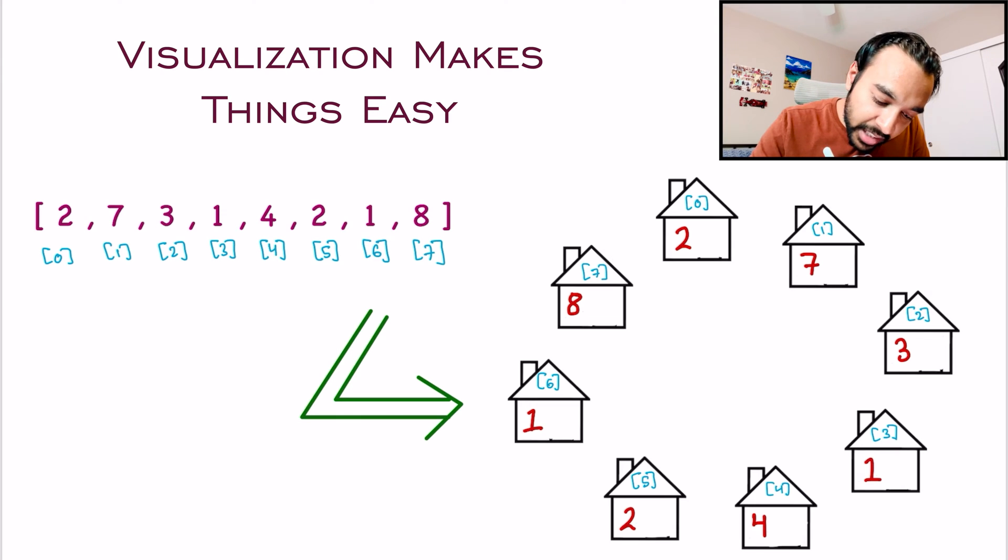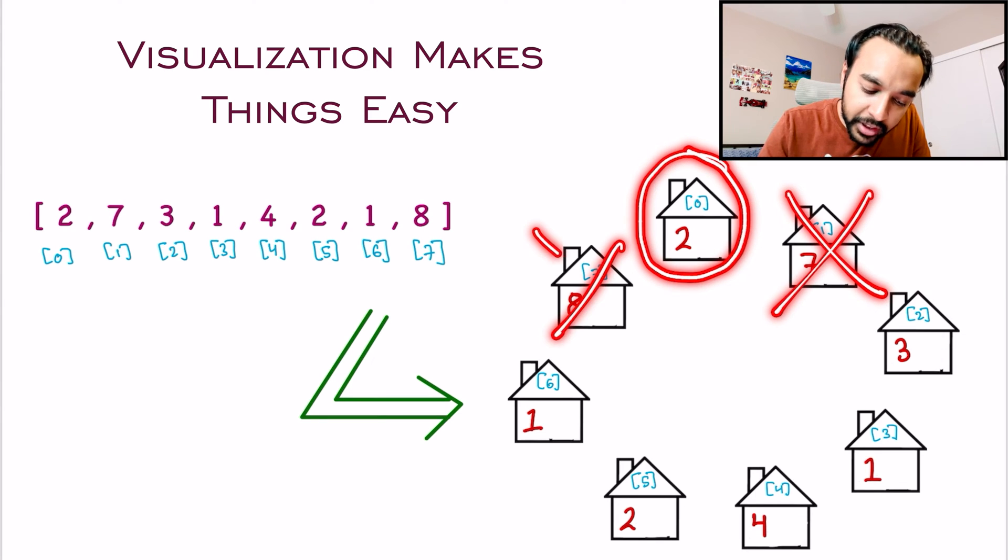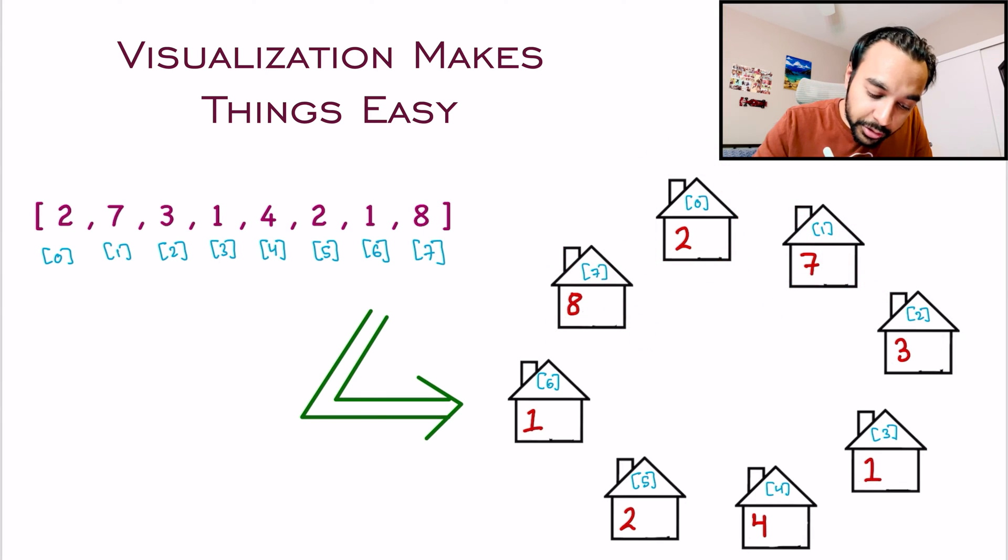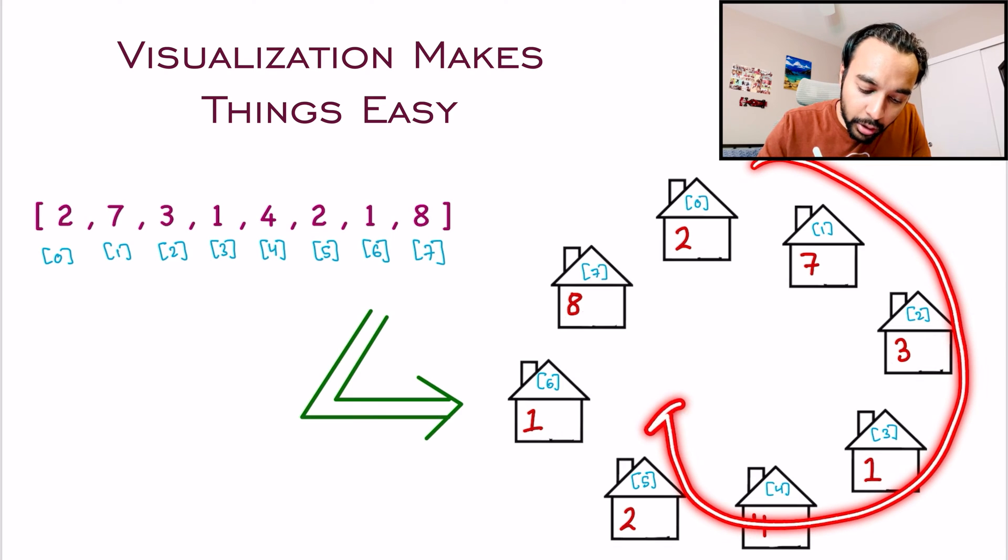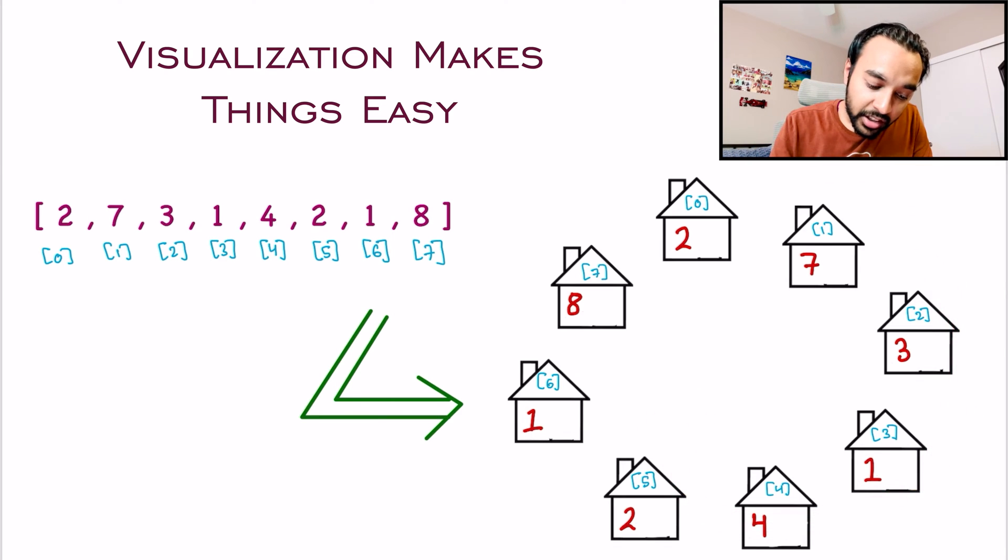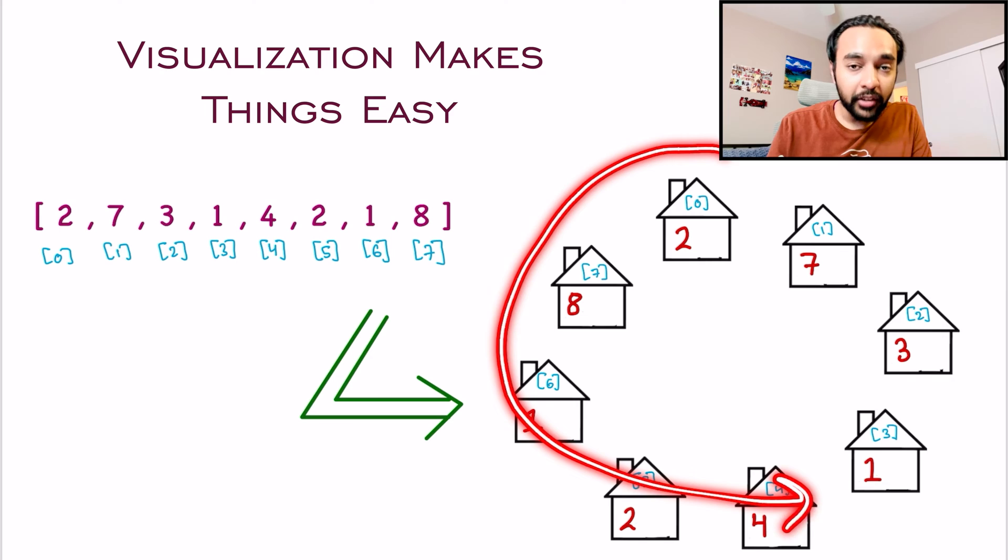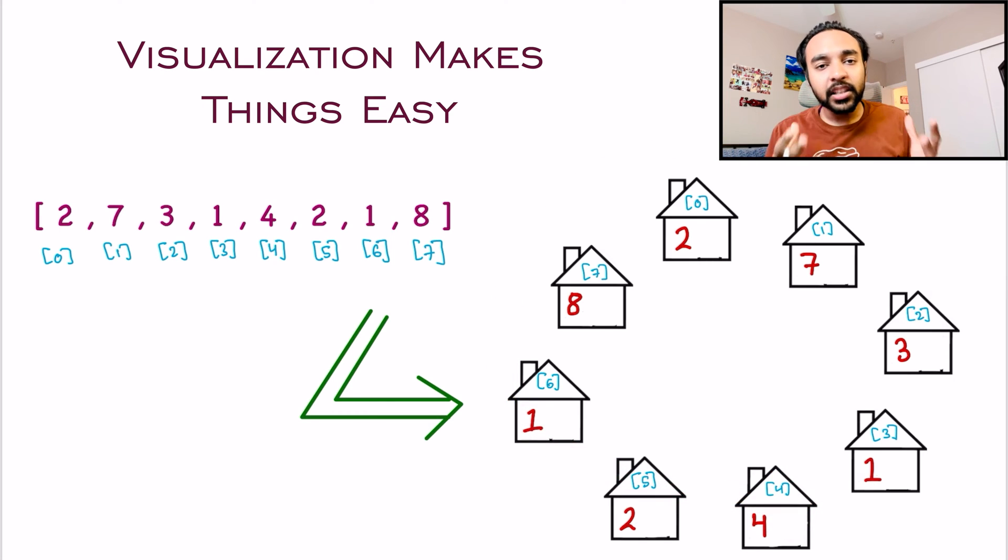So it means that you can start robbing this house and then you cannot rob any of these two houses. So you can try to go in any direction. You can go from left to right in a clockwise direction or you can go from right to left. Both of the methods are perfectly correct.